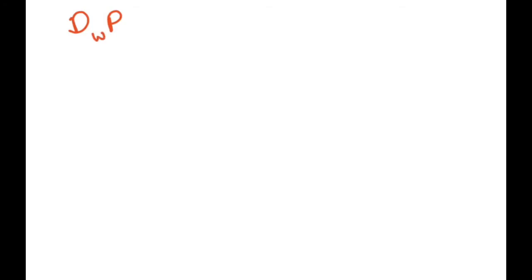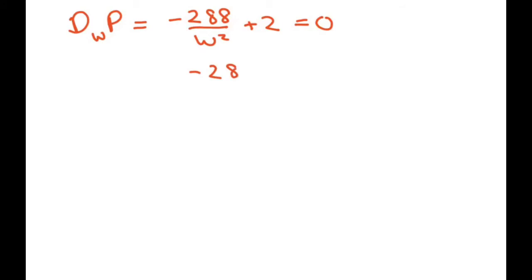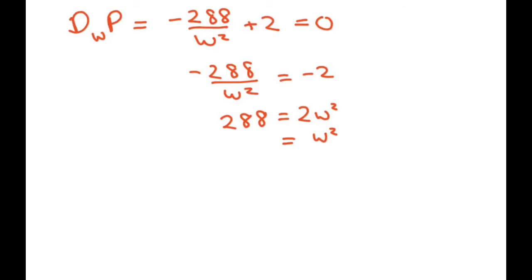Now we take the derivative of our perimeter with respect to W. We get negative 288 over W squared plus 2. In order to get the minimum, we set this to zero. So we have 288 over W squared equals 2, which gives us 288 equals 2W squared, so W squared equals 144, therefore W equals 12.